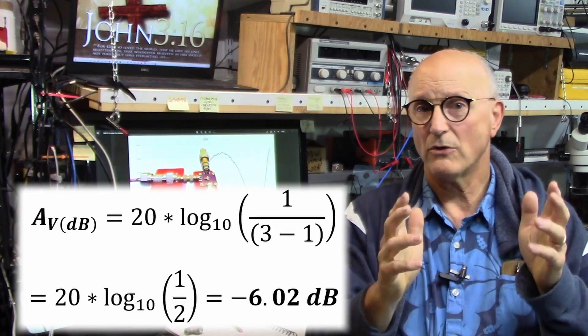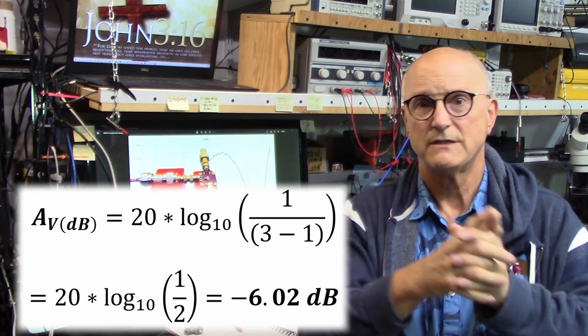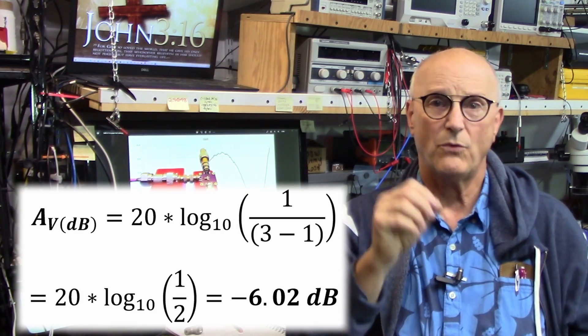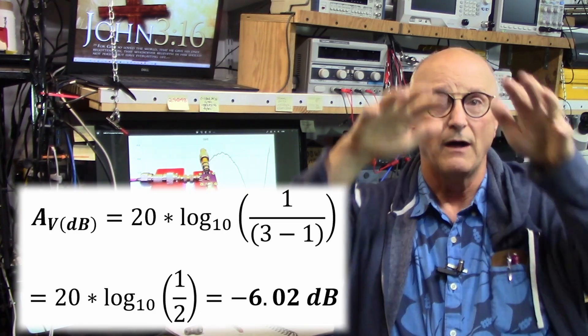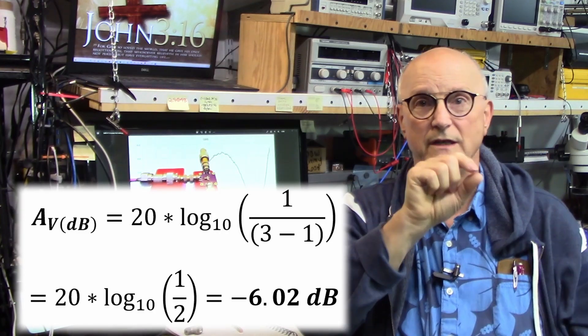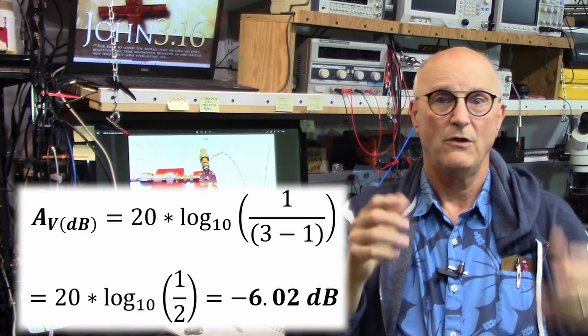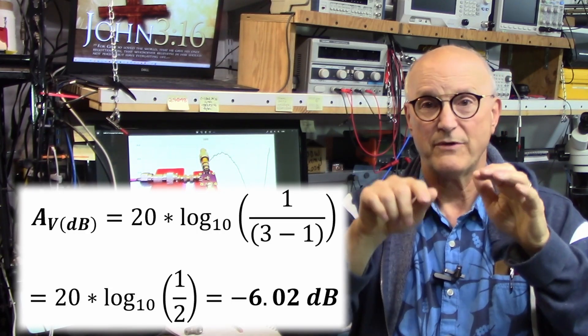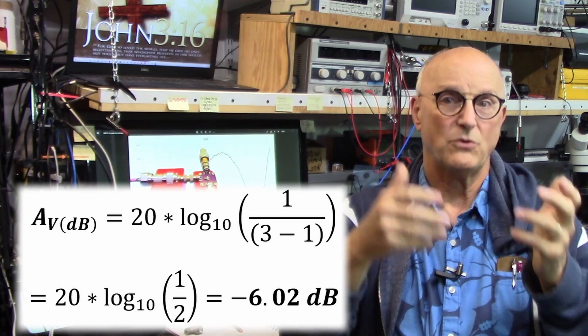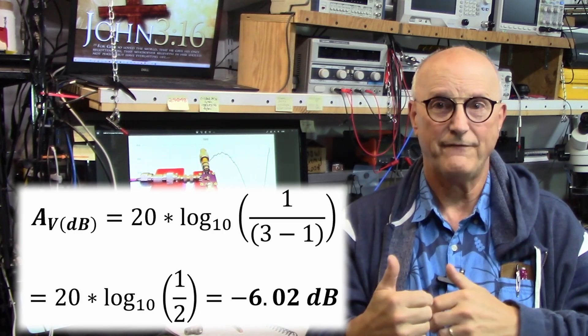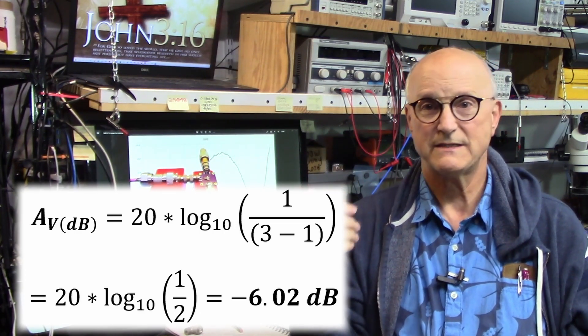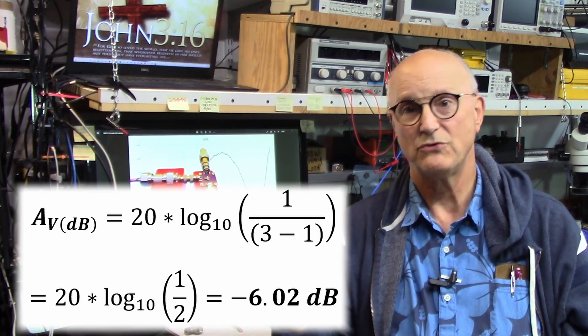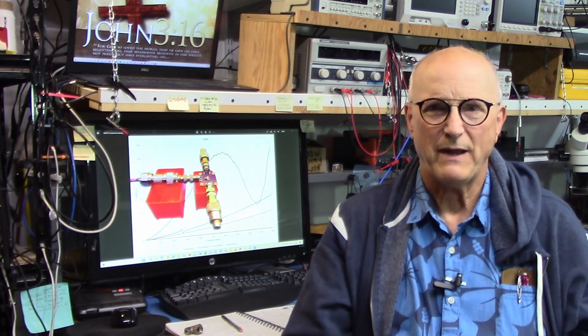And I can expect the power loss from the input port to the output port to be 20 times the log of the quantity 1 over the number of ports minus 1, which gives me 20 times the log of 1 divided by 3 minus 1, or 20 times the log of 1 half, which I end up with minus 6.02 dB. Now that I know what I need and what to expect from this, let's do a quick experiment.